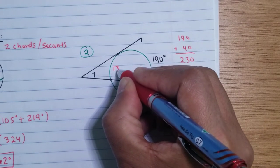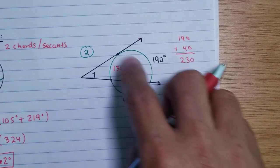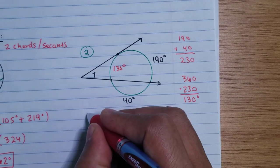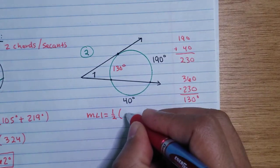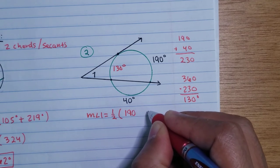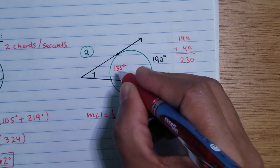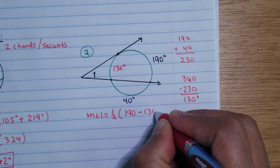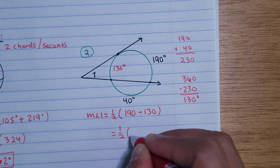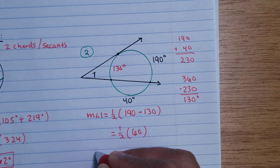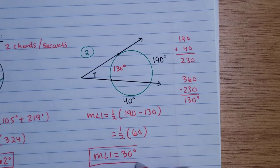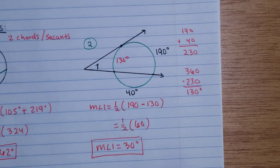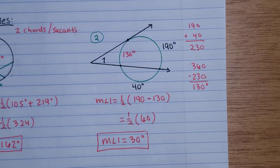Now we have both intercepted arcs. The formula gives us: Angle 1 = ½(190 − 130) = ½(60) = 30 degrees. So the measure of Angle 1 is 30 degrees. I hope that was clear enough. I'll see you in the next lesson — take care, bye-bye!